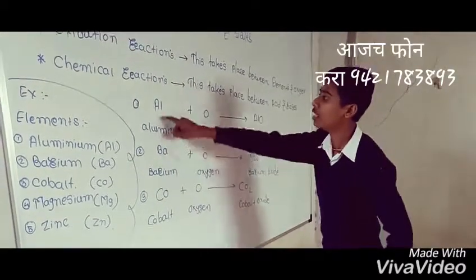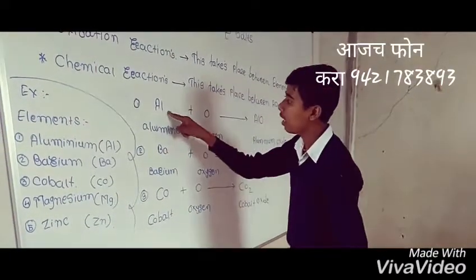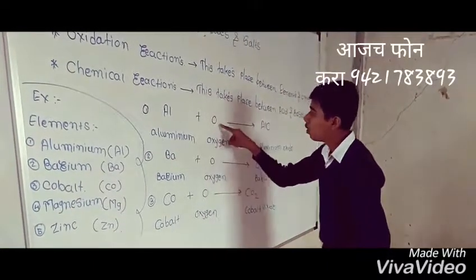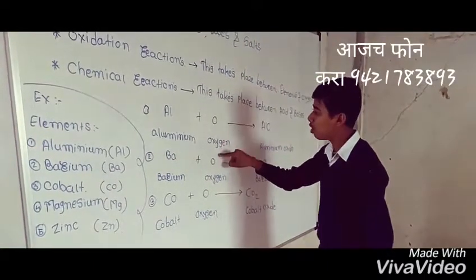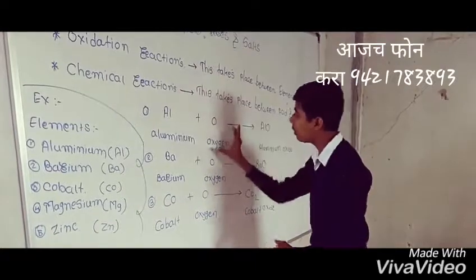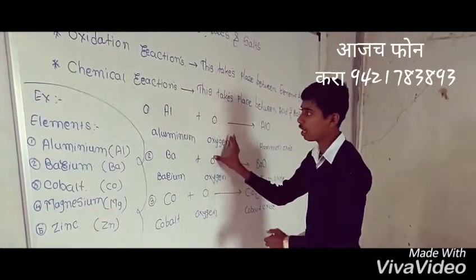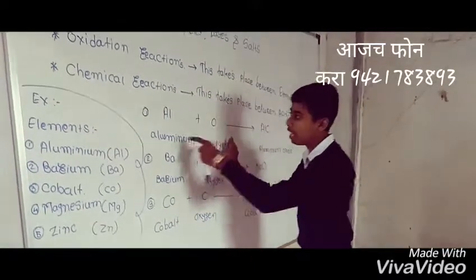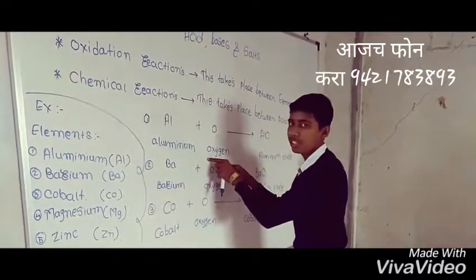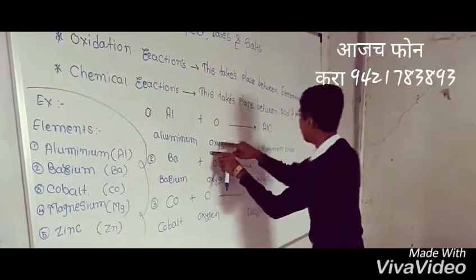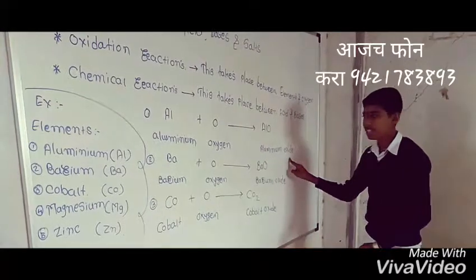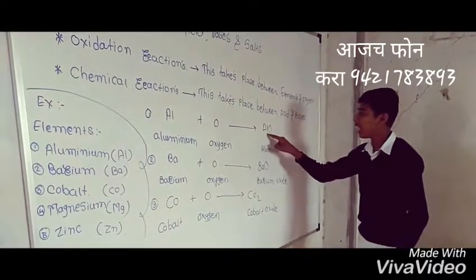Here is the first reaction. Al means aluminum and O means oxygen. When aluminum reacts with oxygen, we form aluminum oxide, which means AlO.